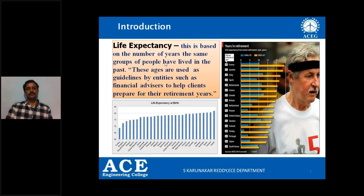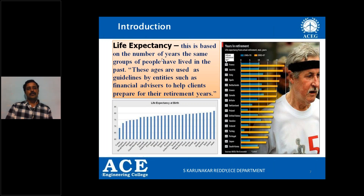Similarly, you have got an application in life expectancy. This is based on the number of years the same group of people have lived in the past. Based on that data, the age of retirement will be given. Different countries have got different retirement ages. Based on the previous data of how long a group of people lived, the retirement age will be calculated. You can see statistics of different countries where the retirement ages are different.